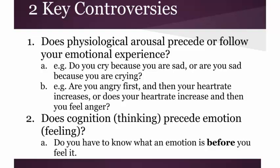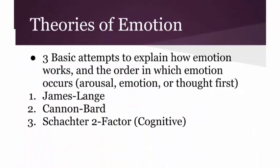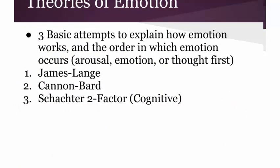Does expressive behavior come first and the emotion follows, or does the emotion happen first and expressive behavior follows? Another example: are you angry first and that anger fuels an increased heartbeat, or does your heart rate increase and then cause anger? The second controversy is about cognition — do you need to label an emotion cognitively before you can actually experience it, or can you experience an emotion without thinking about it? Those are the two controversies about the order in which things occur.